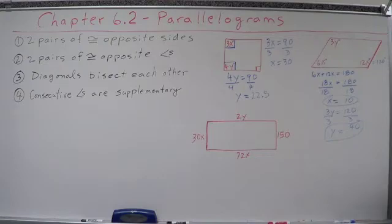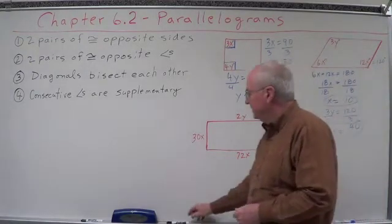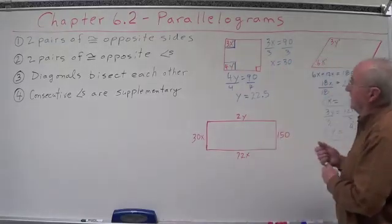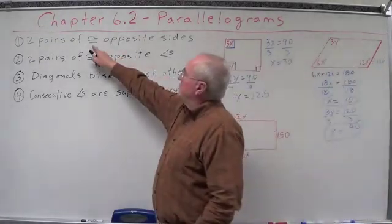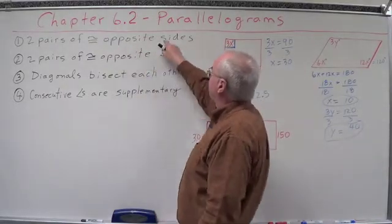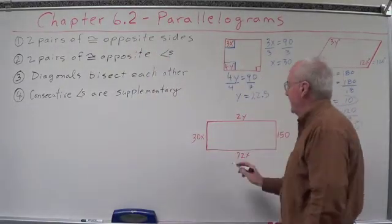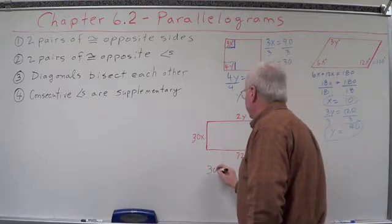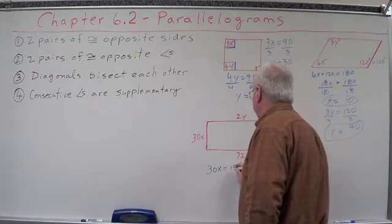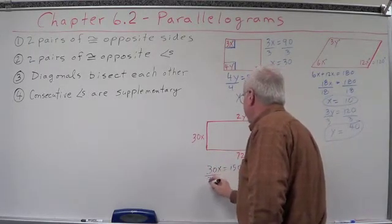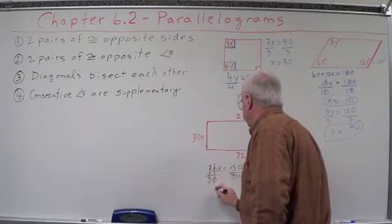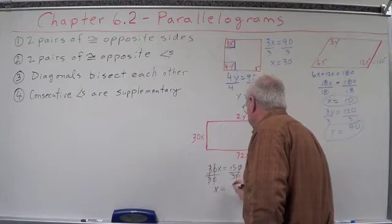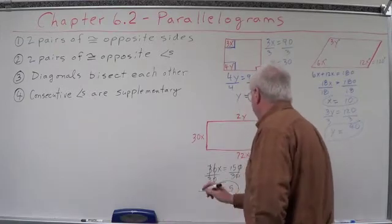This one, again, we're given parallelogram. Let's look at our thing over here. These are sides, and we're told that we have two pairs of congruent opposite sides. Got 150 here. Here, we got 30x, so that looks pretty easy. 30x equals 150 divided by 30, x equals 5. Got our x.